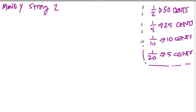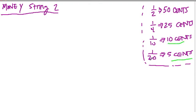We're going to use the connection between fractions and coins to figure out different sums. In this video, we're going to introduce dimes and nickels as a focus. Let's look at the first problem: one half plus one fifth.